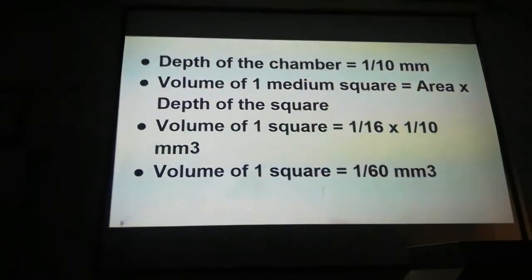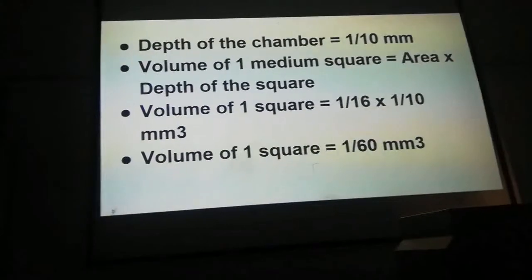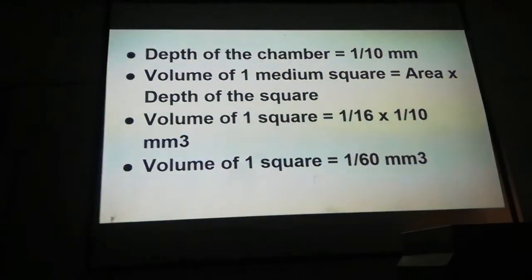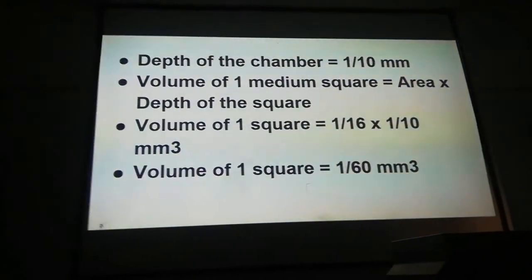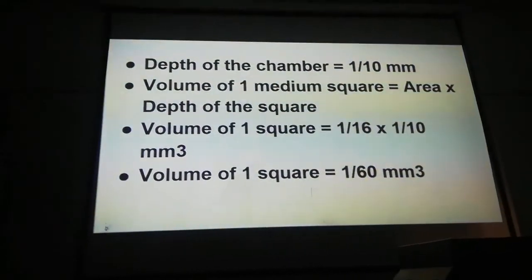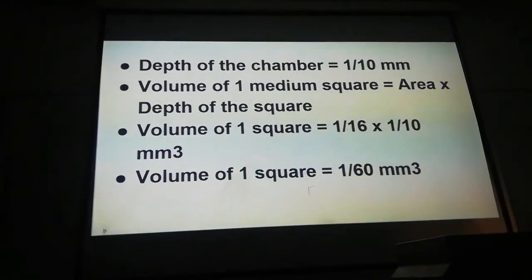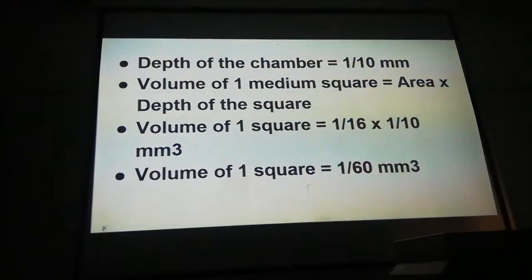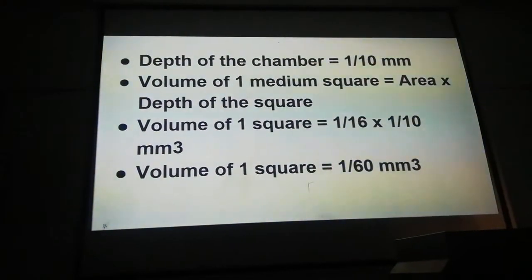With the depth known, we can calculate the volume of 1 medium square as area × depth. The volume will be 1/16 (area) × 1/10 (depth), giving a volume of 1/160 mm³ for 1 medium square.